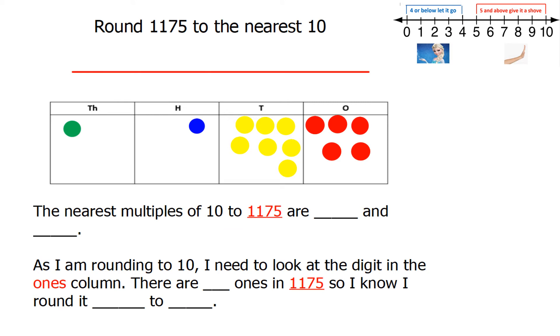Round 1175 to the nearest 10. You may notice that my place value chart has got an extra column in it. That is because we are working with a 4-digit number now, so we have a thousands column too.